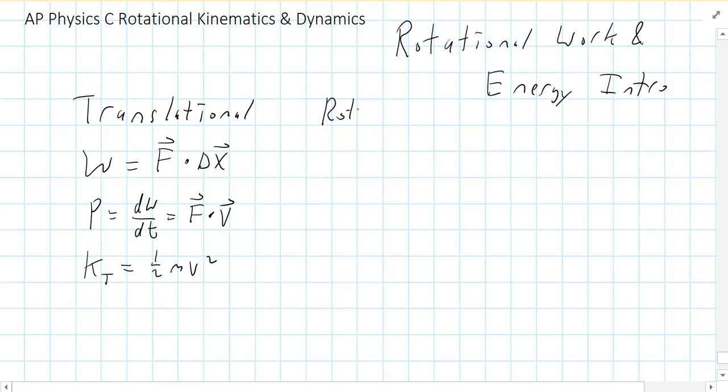Well, rotational has analogous equations. So, the work done in rotational is instead of force, we have torque. Instead of delta X, we have delta theta. Power is still dw dt, but now, instead of force times velocity, it is torque dot omega. And finally, kinetic energy rotational, instead of being one half mv squared, it's one half I omega squared.